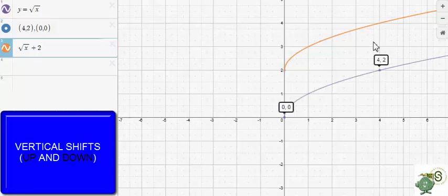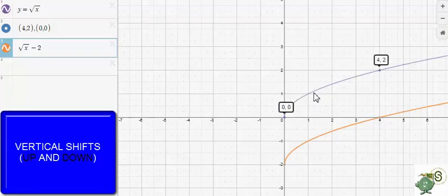If I wanted to move the purple graph down 2, I could have simply subtracted 2 on the output, and my original function in purple would have been transformed into the orange, and they're related in such that the orange graph is 2 units down relative to the purple. So instead of having (4,2), for example, that point got mapped to (4,0).